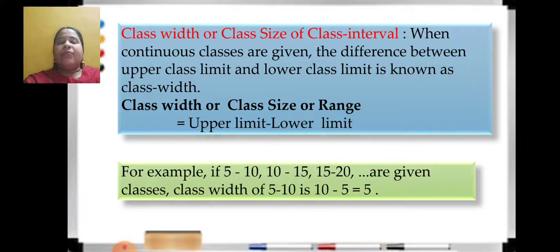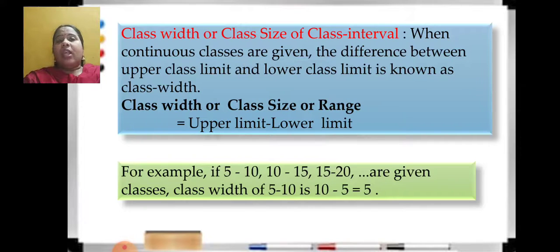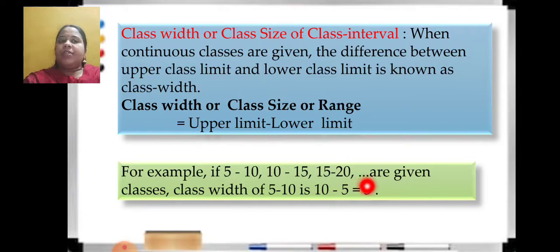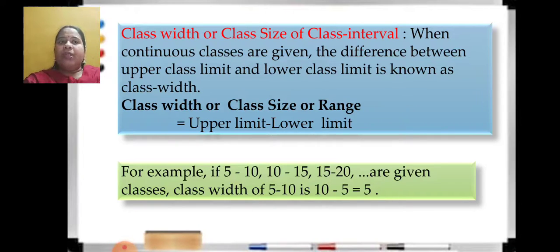For example, take the classes 5 to 10, 10 to 15, 15 to 20. Class width will always remain the same. For the class 5 to 10, the formula is upper class limit minus lower limit: 10 minus 5 equals 5. So the formula for range is upper limit minus lower limit.